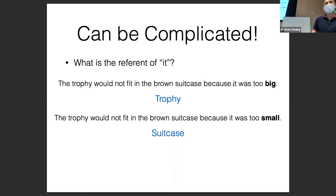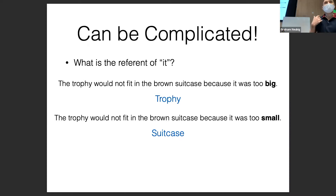You need context, and specifically you know the suitcase holds things, and for something to fit inside something else, it needs to be smaller. This is something people take for granted so much that you even had trouble explaining why you were able to answer correctly. Being able to do this automatically in a model is no trivial feat.